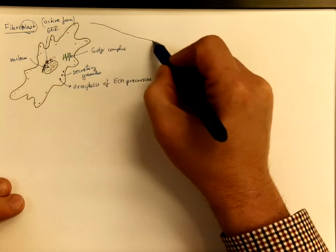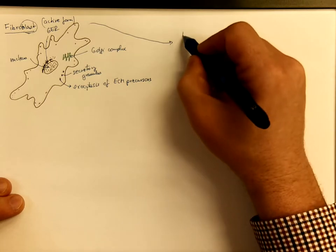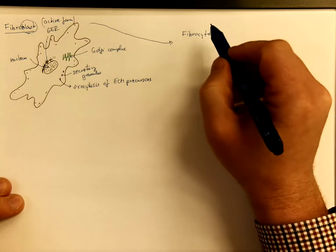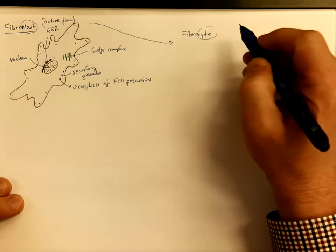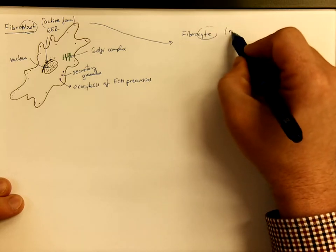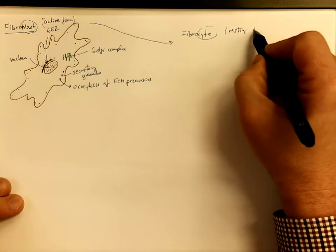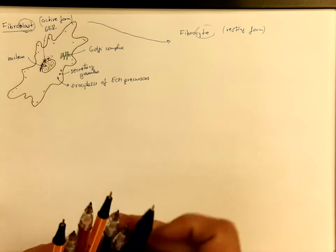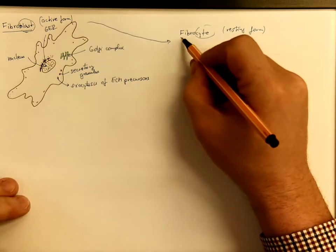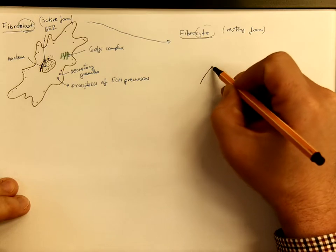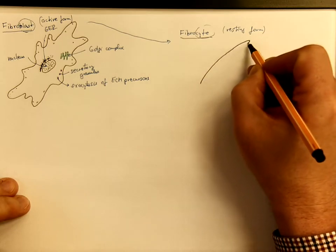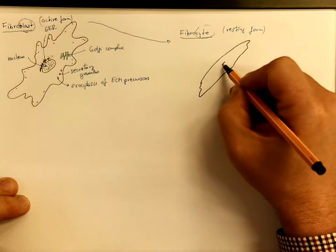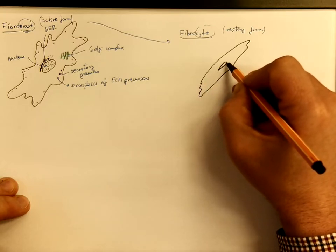This can mature into a more resting form called fibrocyte. So usually the cyte represents the resting form of the cell. The shape is usually spindle shaped.